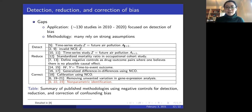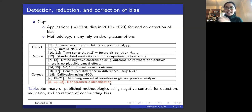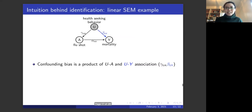Many existing methods rely on strong distributional assumptions about the data. The seminal work I want to highlight is by Dr. Wang Miao — who will speak shortly — and Eric Tchetgen Tchetgen. They developed a non-parametric identification of the causal effect using a pair of negative control variables, one NCE and one NCO. It is non-parametric in the sense that it does not rely on any distributional assumptions. In the next few slides I'll give some intuition on how to go beyond bias detection and use negative control variables to remove confounding bias.